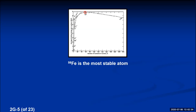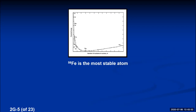We can express this graph differently by switching the y-axis to potential energy. Stable things have low potential energy, so iron-56 would sit at the bottom of the potential energy curve, with all other atoms slightly higher. The graph becomes the reciprocal of itself. Iron-56 being at the bottom of the potential energy curve confirms it is the most stable atom.